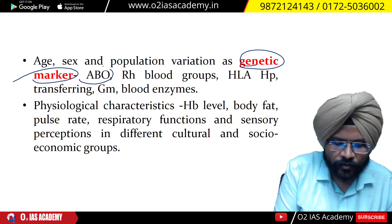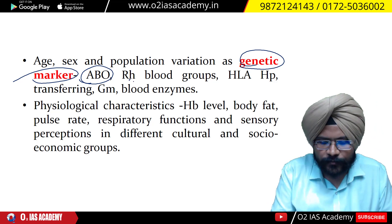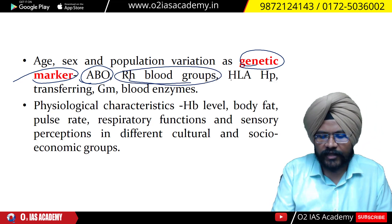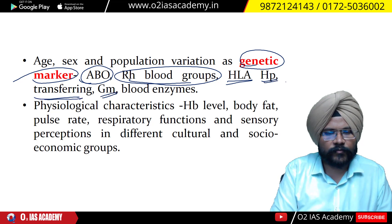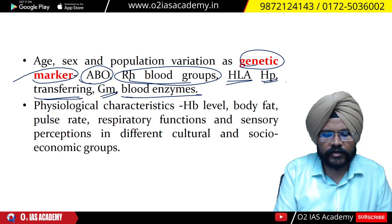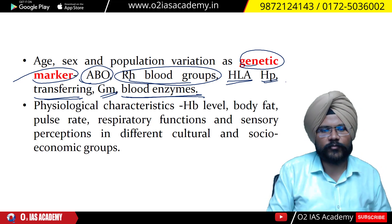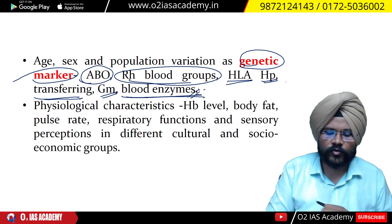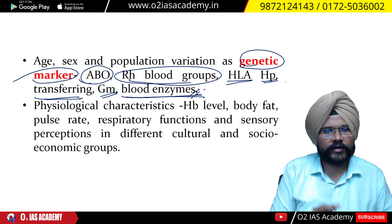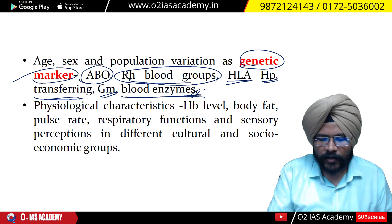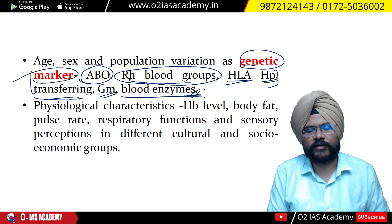So a genetic marker gives you a specific signal. ABO blood group is to be studied as a genetic marker. RH blood group is to be studied as a genetic marker. HLA, HP, transferrin, GM, and other blood enzymes — like G6PD enzyme — all of these are to be studied as genetic markers, from the perspective of diversity.